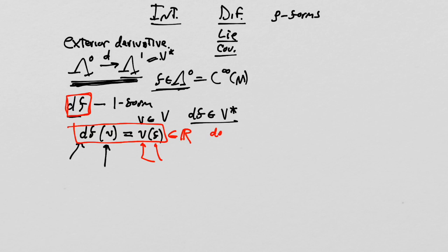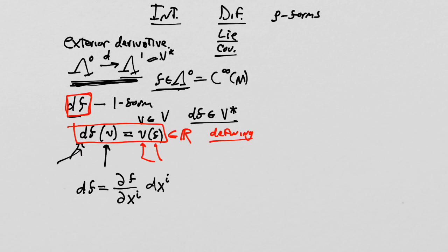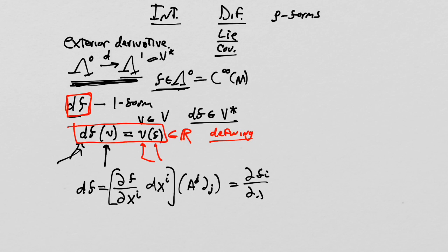We're building a one-form off of a function, and that one-form gobbles vectors in exactly the same way the vector would have gobbled up the original function. The result is always a real number. This is our definition of how we want the exterior derivative of a function to behave. It turns out we can define a one-form more specifically as the partial derivative of f with respect to x^i times dx^i. We can check this satisfies the rule by feeding it a vector x^j partial_j, which gives delta^i_j times a^j times df/dx^i = v(f).